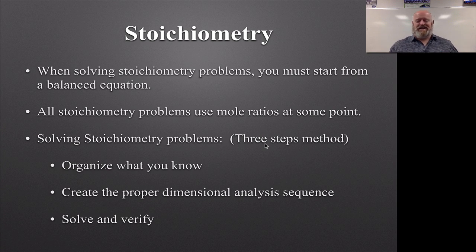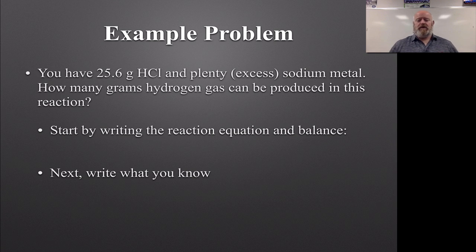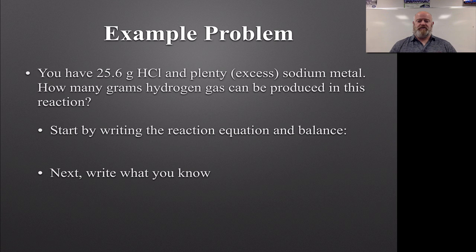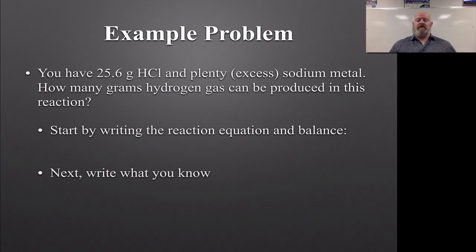The best way to do this is to just look at a problem. Let's say we go to lab and we want to use 25.6 grams of hydrochloric acid with an excess of sodium metal. The word 'excess' tells us we don't need to worry about the sodium because we have more than we need — so what limits this process is our hydrochloric acid. We want to know how many grams of hydrogen gas can be made.